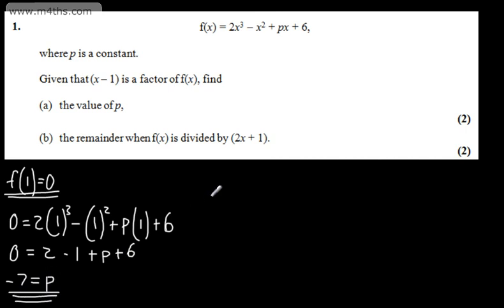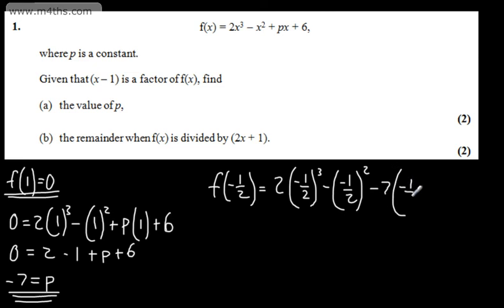In part (b), we need to find the remainder when f(x) is divided by (2x + 1). So f(-1/2) = 2(-1/2)³ - (-1/2)² - 7(-1/2) + 6. We now know that p = -7.